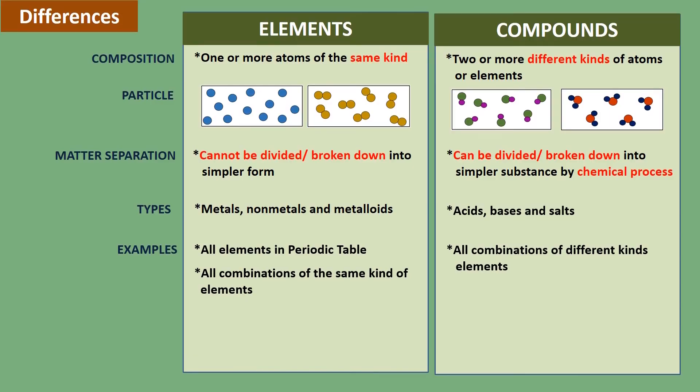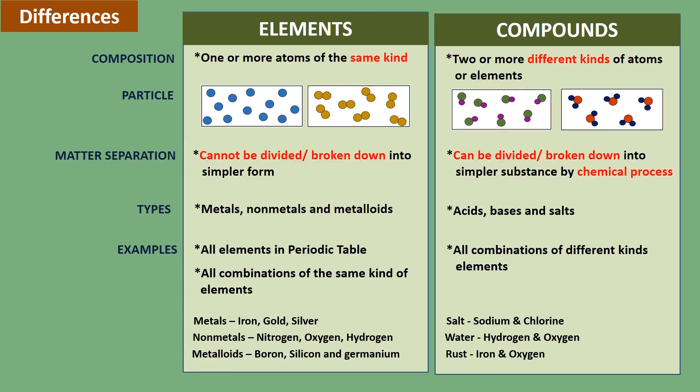Specifically, the examples of elements which are metals are iron, gold, and silver. Non-metals are nitrogen, oxygen, and hydrogen, and metalloids are boron, silicon, and germanium. The specific examples of compounds are salt, which is a combination of sodium and chlorine, water, which is a byproduct of hydrogen and oxygen, and rust, which is formed when iron reacts with oxygen.